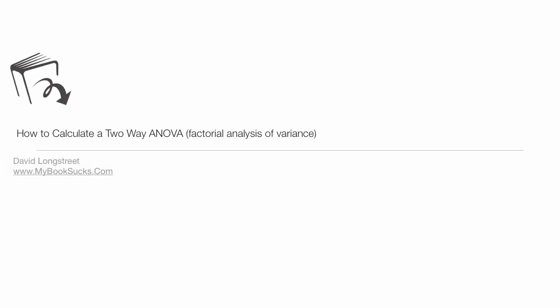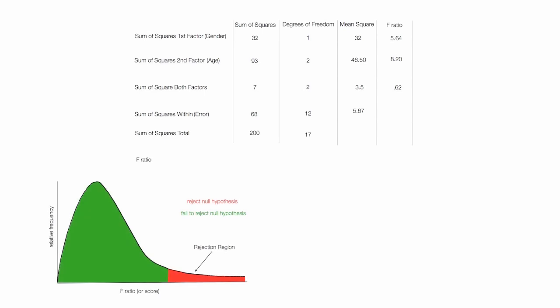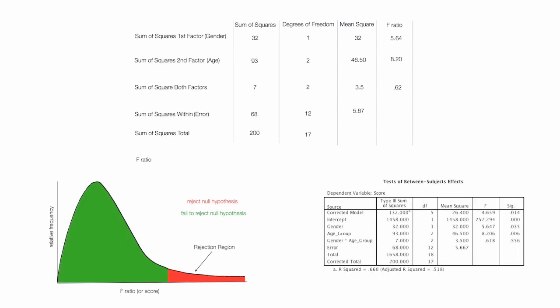In this tutorial I'm going to teach you how to calculate a two-way ANOVA by hand, manually, and I'll walk you through it step-by-step. This tutorial is part of a playlist on two-way ANOVA where I discuss how to calculate two-way ANOVA, how to interpret the results, and how to calculate it using SPSS and Microsoft Excel. You can find a link to the playlist right below.